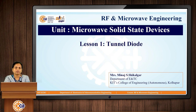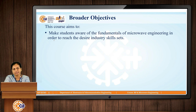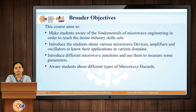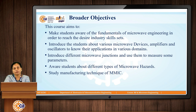From this course I will discuss the first unit which is Microwave Solid State Devices, and the first lesson we are going to discuss is about the Tunnel Diode. The broader objectives of this course are: to make students aware of fundamentals of microwave engineering in order to reach the desired industry skill sets; to introduce students about various microwave devices, amplifiers and oscillators and their applications; to introduce different microwave junctions and use them to measure some parameters; to make students aware about different types of microwave hazards; and to study the manufacturing technique of Monolithic Microwave Integrated Circuits, called MMIC.